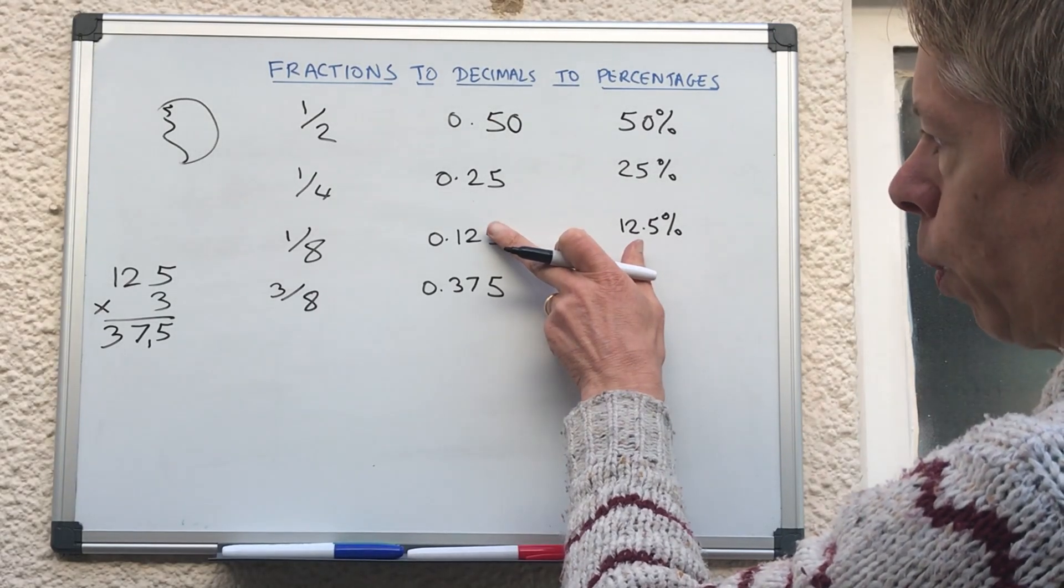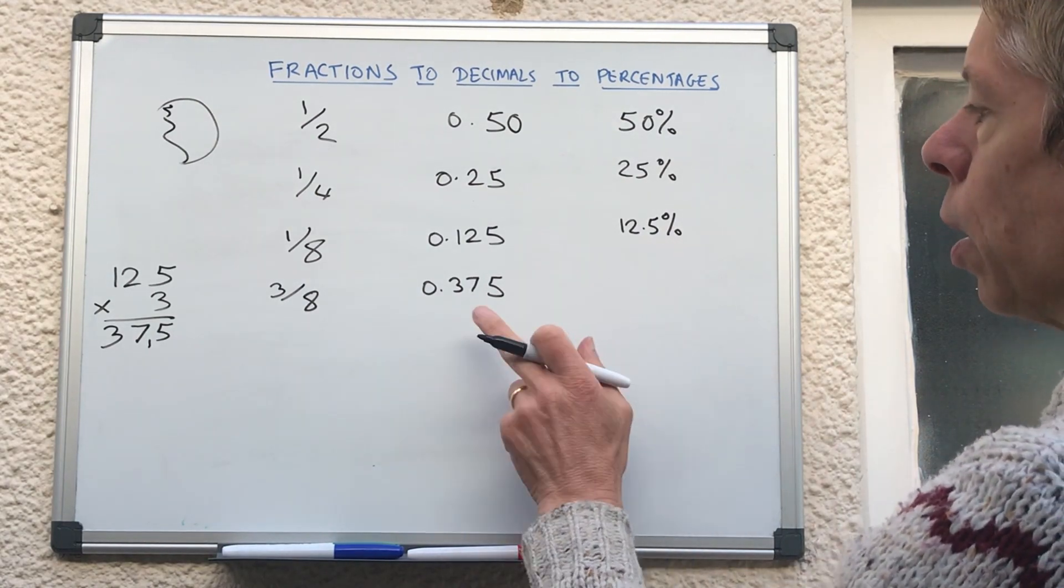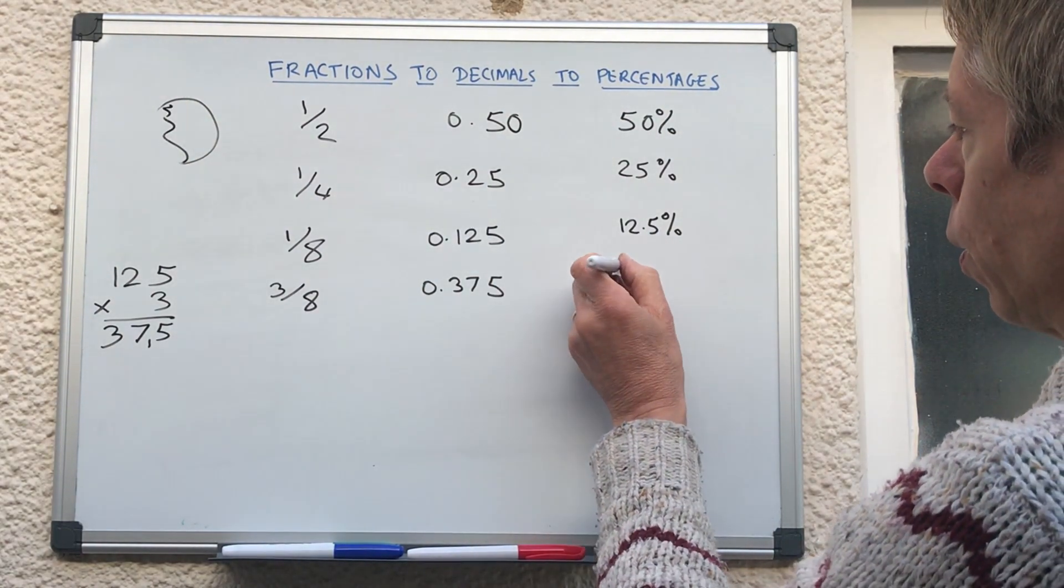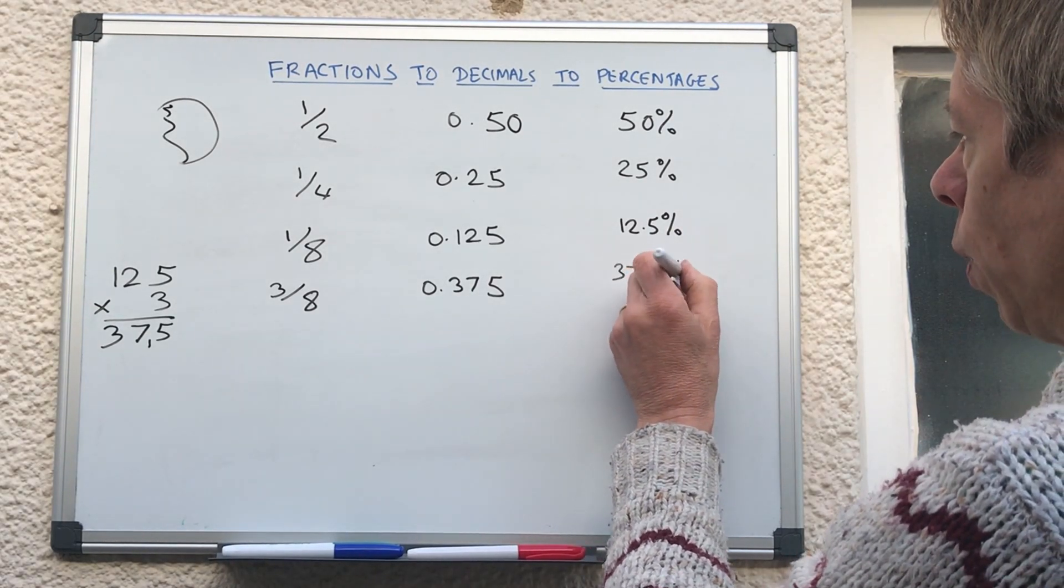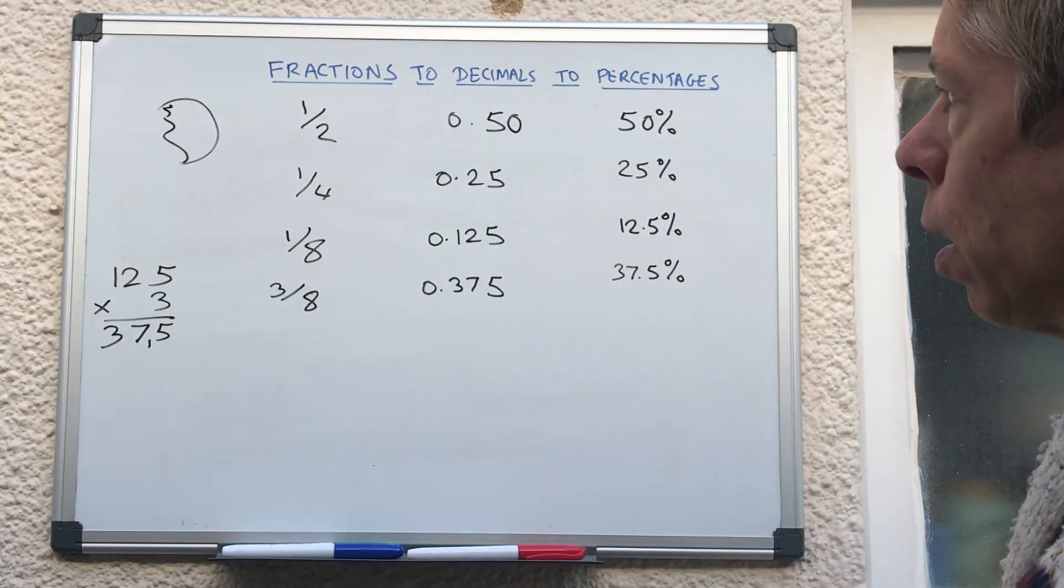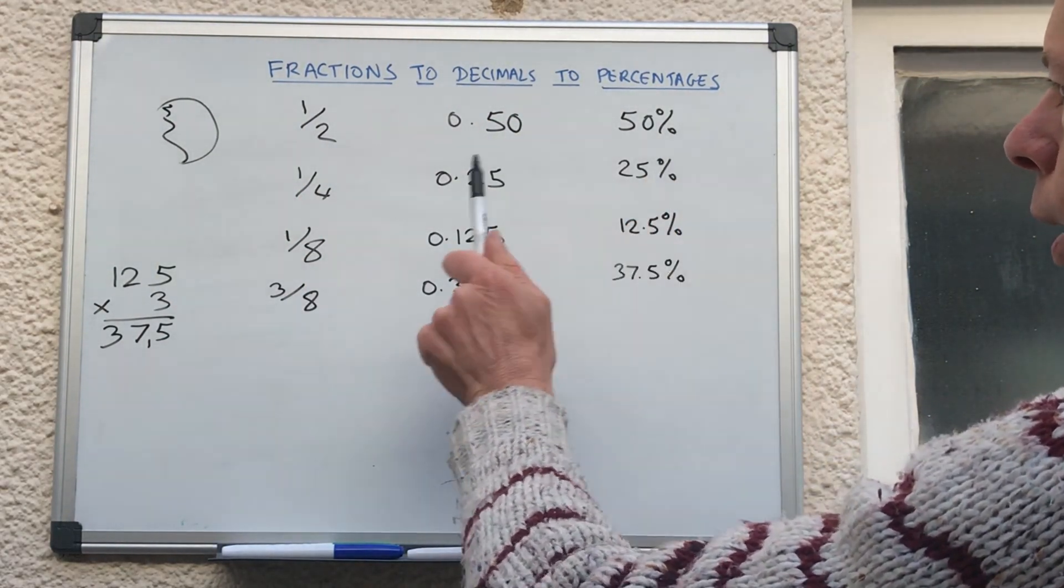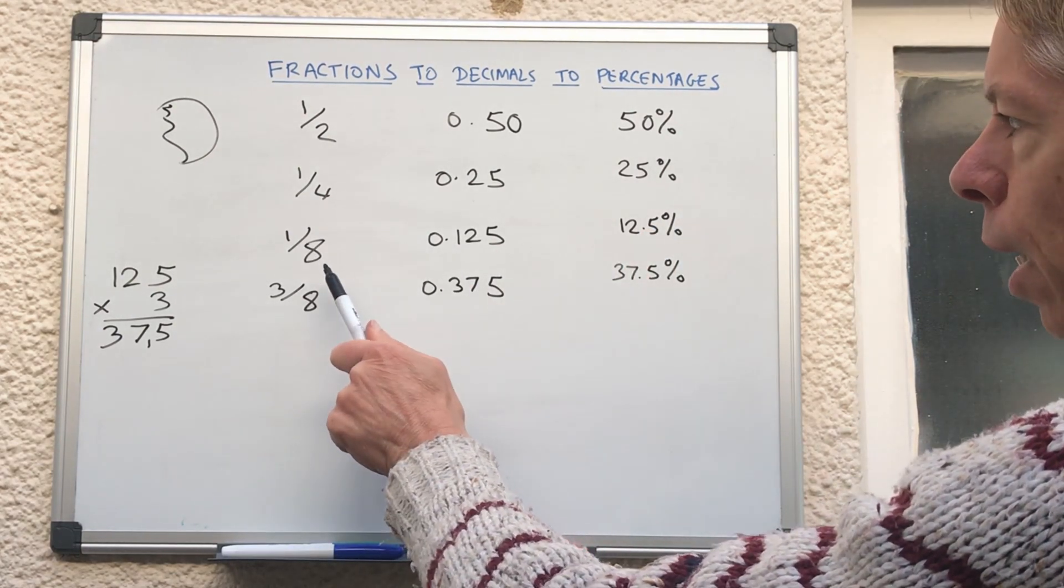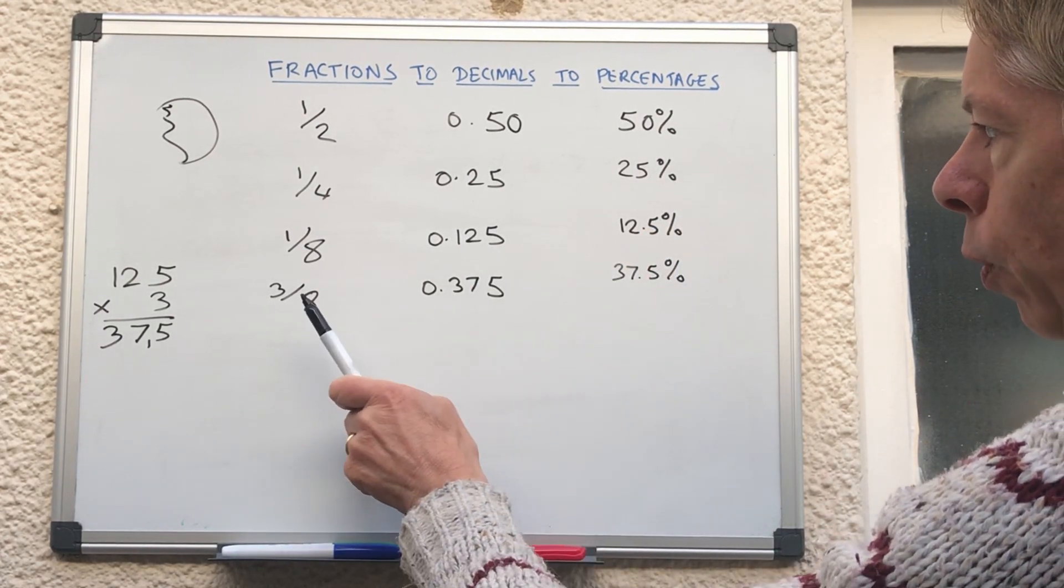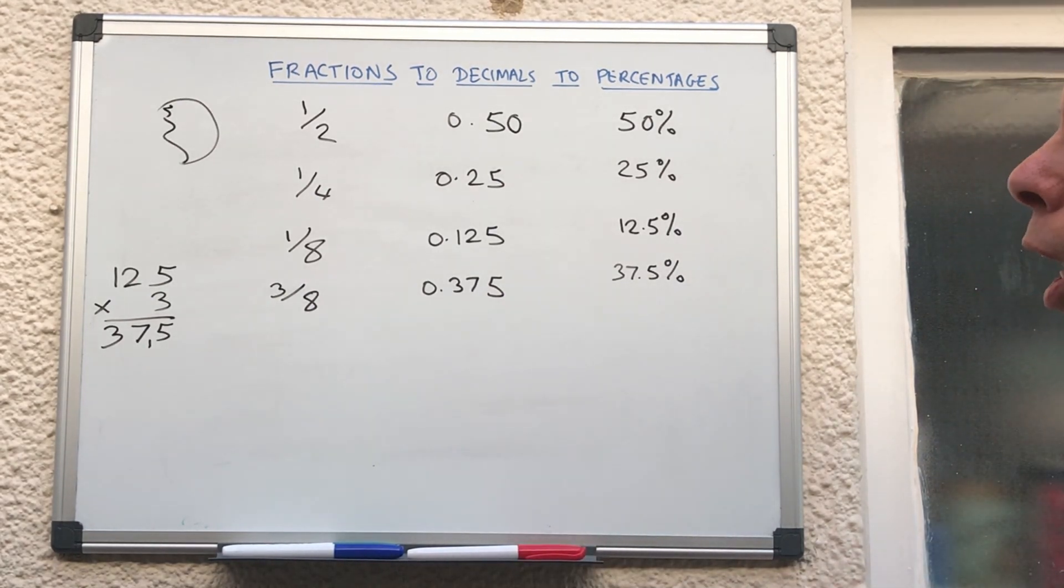So the whole numbers in your percentage are the first two numbers in your decimal. So 0.12, 12%. 0.5, so 12.5%. So this one is going to be, first two places, 37, and then we put a decimal point, 37.5%. So we know that half is 0.5, which is 50%, a quarter is 0.25, which is 25%, an eighth is 0.125, which is 12.5%, three eighths is 0.375, which is 37.5%.